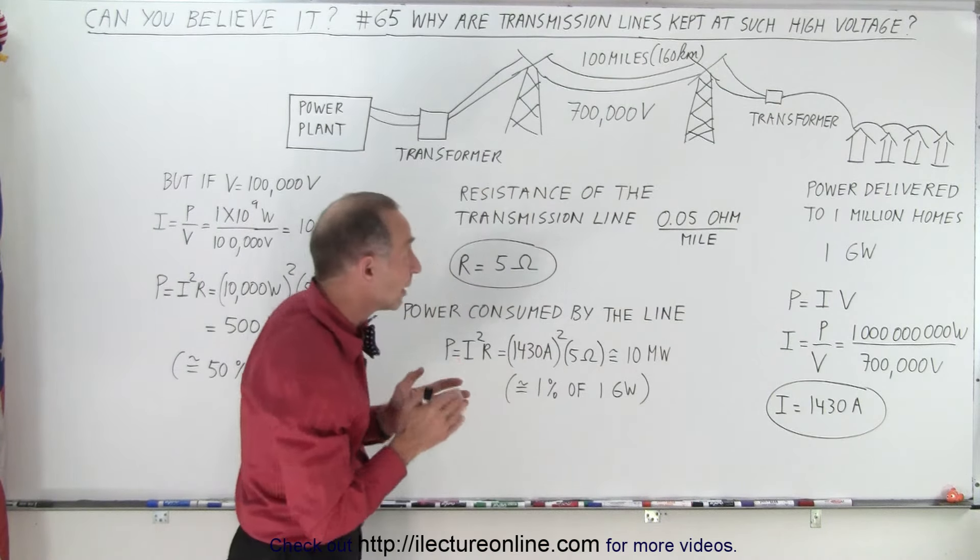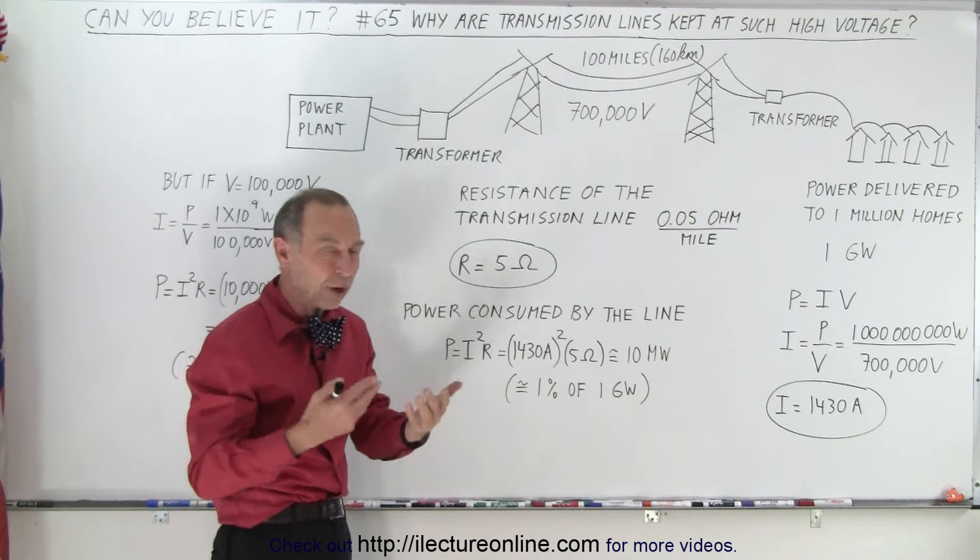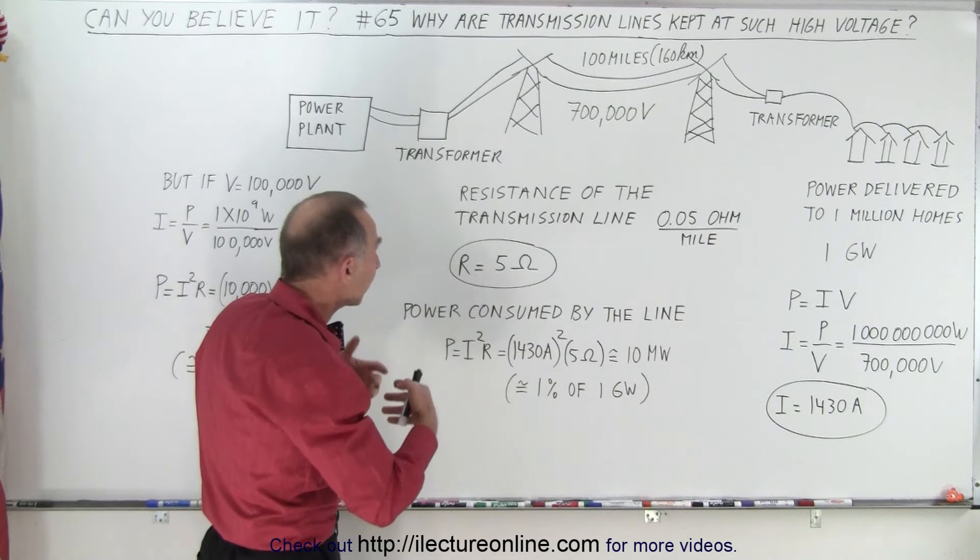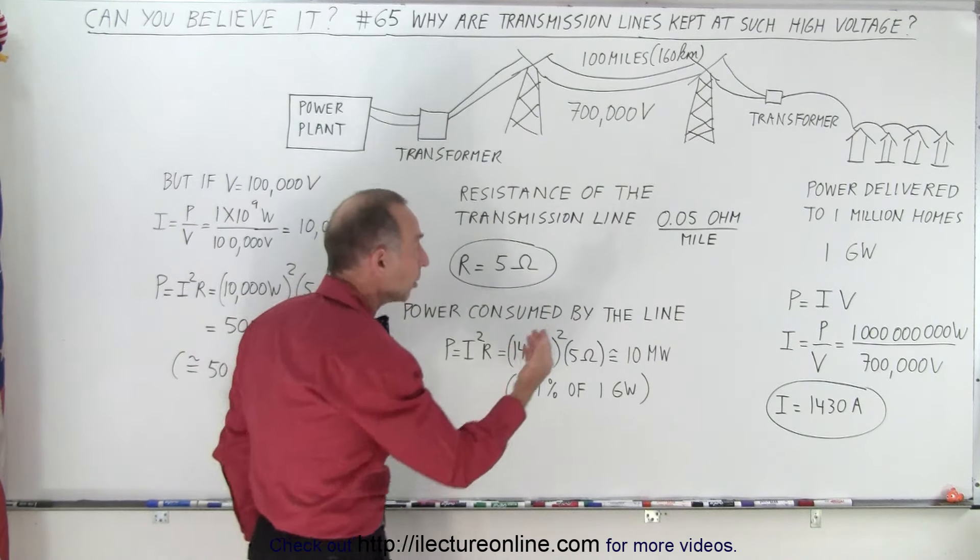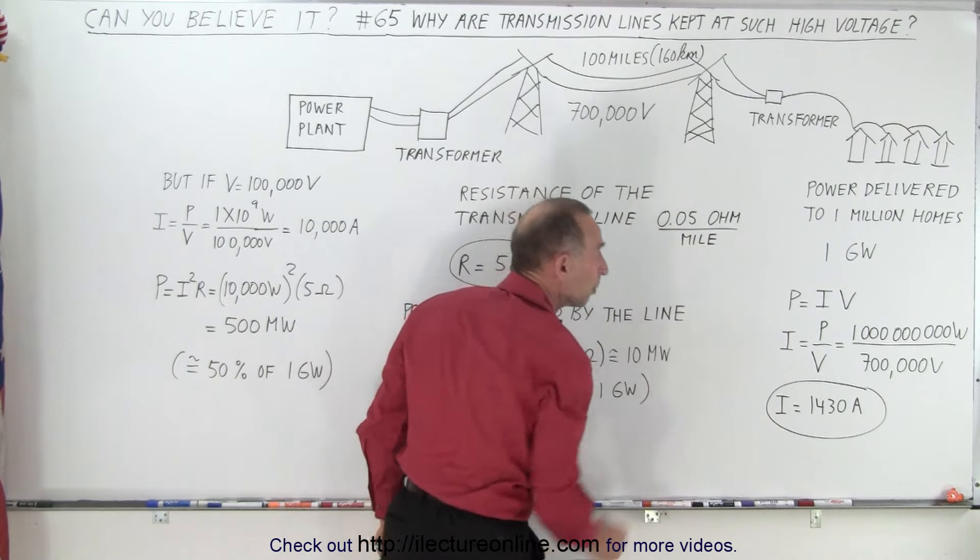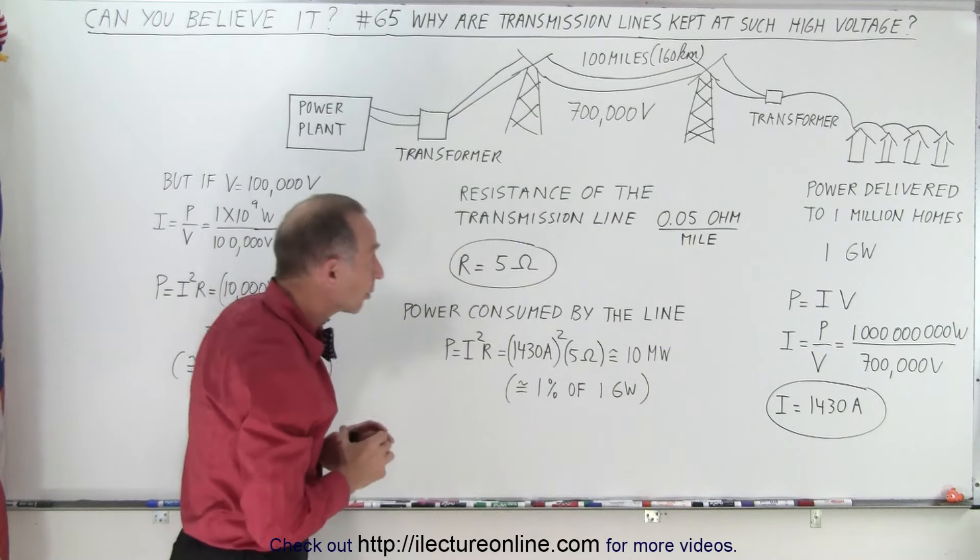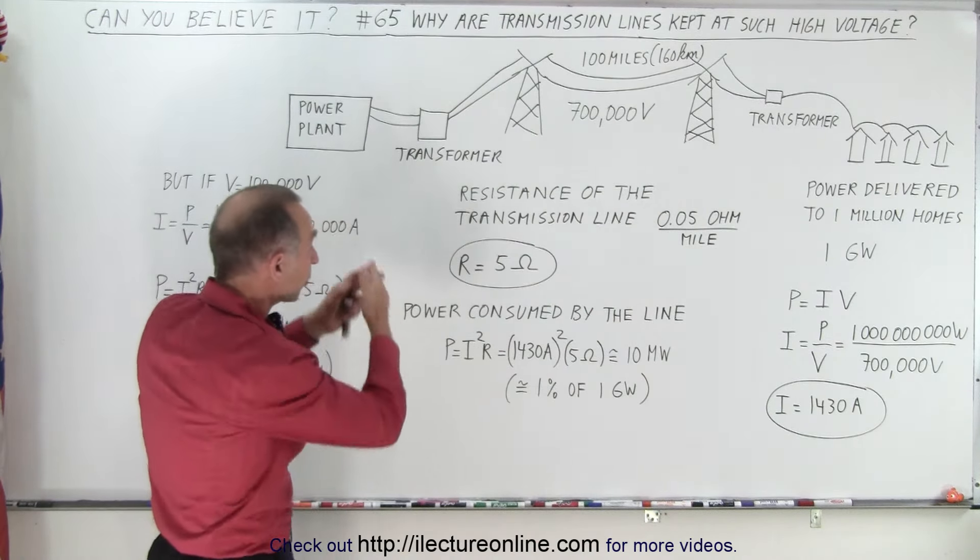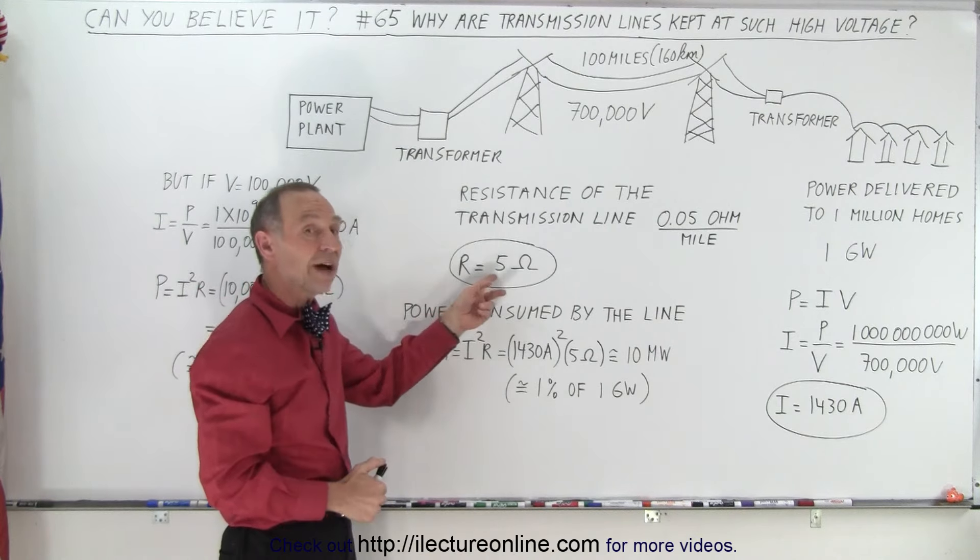Now the wire, even though it's made out of metal, typically those wires are made out of aluminum, they do have a certain amount of resistance, not much. Let's say 0.05 ohms per mile because they have a very large cross-sectional area, but over a distance of a hundred miles that's as much as five ohms.